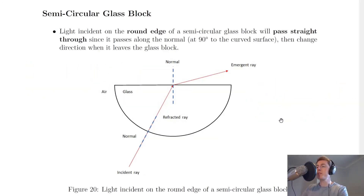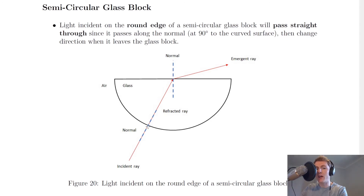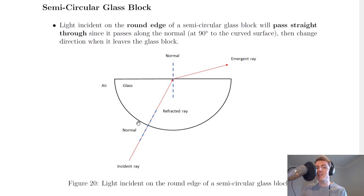Now looking at the semi-circular glass block — if you were to do an experiment using a semi-circular block rather than the rectangular block, you'd see slightly different results. Light incident on the round edge of a semi-circular glass block will pass straight through since it passes along the normal, at 90 degrees to the curved surface, and then change direction when it leaves the glass block. Anywhere along this rounded curved edge is a normal, because the angle the normal makes with the surface at that point is going to be roughly 90 degrees. So the light passes straight through at this point and then changes direction when it leaves the block at the other surface.